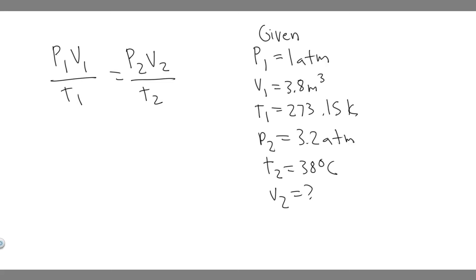In this problem, we're told if 3.8 meters cubed of a gas initially at STP is placed under a pressure of 3.2 atmospheres, the temperature of the gas rises to 38 degrees Celsius, what is the volume? So in this case, what we're going to be doing is solving for the volume. Basically what we're given is two different phases of the gas.